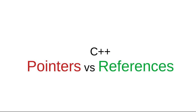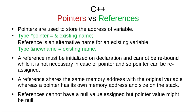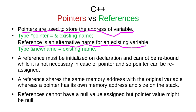In this video I'm going to talk about pointers vs references in C++. Pointers are used to store the address of a variable, while a reference is an alternative name for an existing variable.